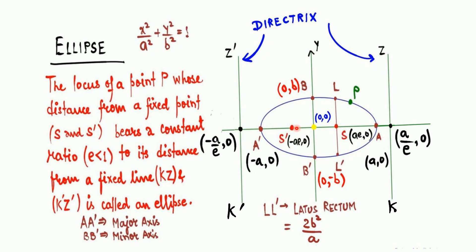The two points S and S-dash are called the focus (plural: foci). The center of this ellipse is at (0, 0). The focus coordinate is (ae, 0), and the vertex coordinate is (a, 0). On the left side it is (−a, 0), since we are going towards the negative x-axis.